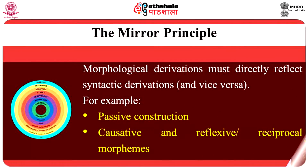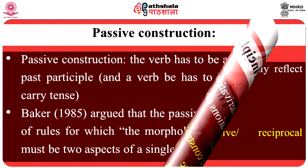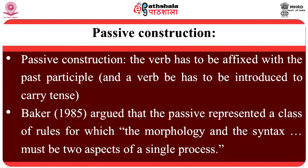The Mirror Principle: A milestone in morphosyntax was Baker's articulation of the Mirror Principle, which stated that morphological derivations must directly reflect syntactic derivations and vice versa. For a clear understanding of the Mirror Principle, Baker cited two examples of morphosyntactic operations: passive construction, and causative and reflexive or reciprocal morphemes. Let us first have a look at passive construction. A syntactic operation like the passive, which moves a noun phrase into the subject position from a lower position in the sentence, has a morphological operation associated with it — namely, the verb has to be affixed with the past participle and a verb 'be' has to be introduced to carry tense.